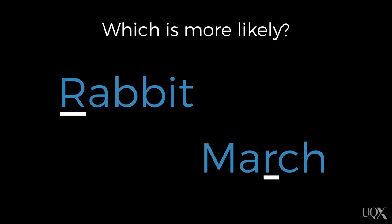In this activity, I'm going to ask you to think about a few different questions and then decide what is the most likely thing to happen. You'll be able to record your responses in the activity that follows this video. The first question is: is it more likely that a word in the English language starts with the letter R, such as 'rabbit', or has R in the third position, such as 'march'?